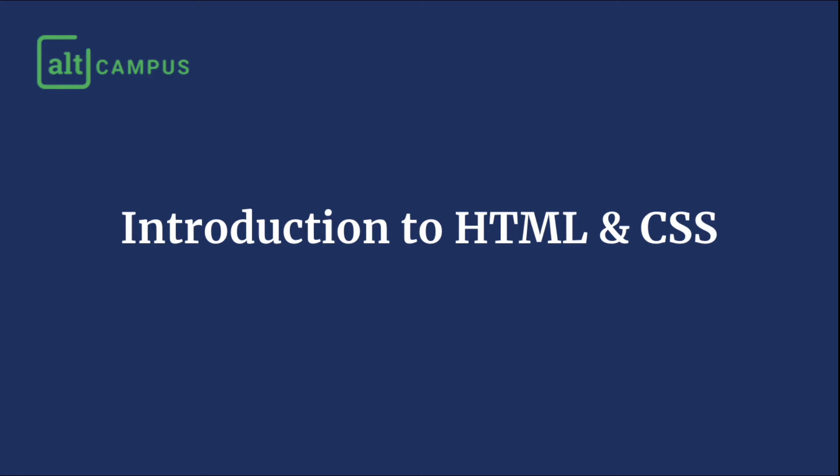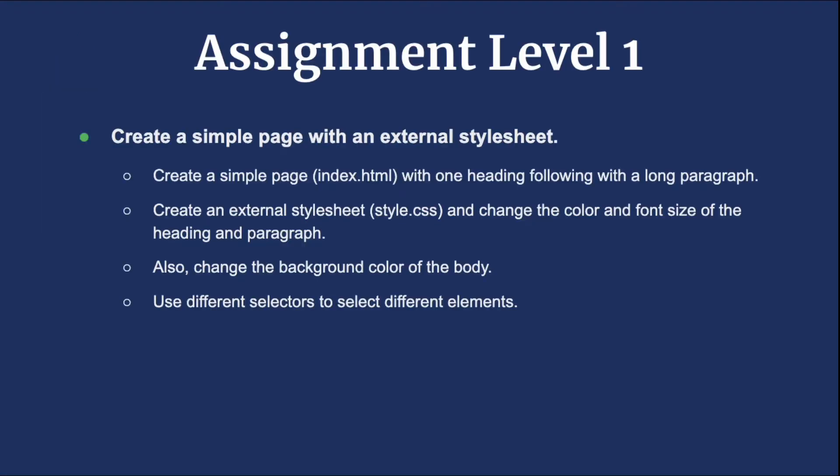In assignment level 1 of introduction to HTML and CSS, we have to create a simple page with an external stylesheet. We need one heading followed by a long paragraph, then create an external stylesheet and change the color and font size of the heading as well as the paragraph. Also, we need to change the background color of the body.